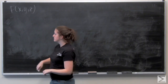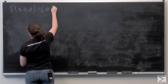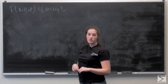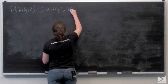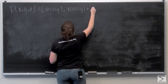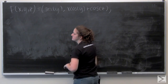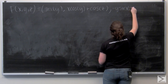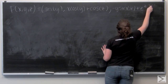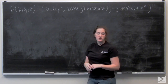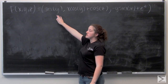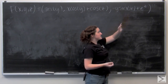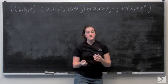Let me rewrite my vector field. So I have sine of y, then x cosine y plus cosine z, and then negative y sine of z plus e to the z. If I'm saying this is a conservative vector field, that means it's the gradient of some function — so these components are its partial derivatives with respect to x, y, and z respectively. I can integrate each term with respect to that variable to get a potential function.